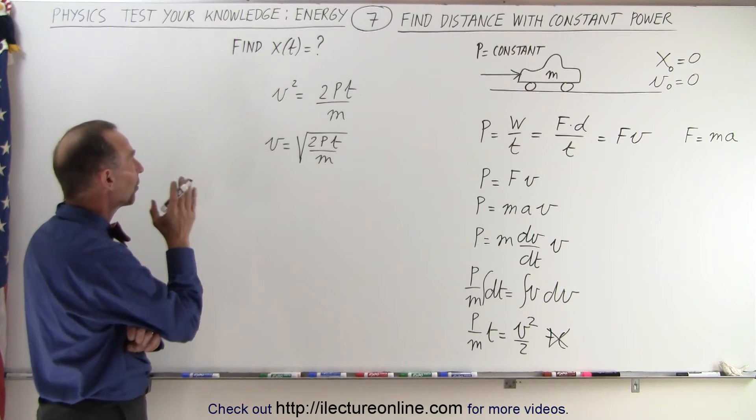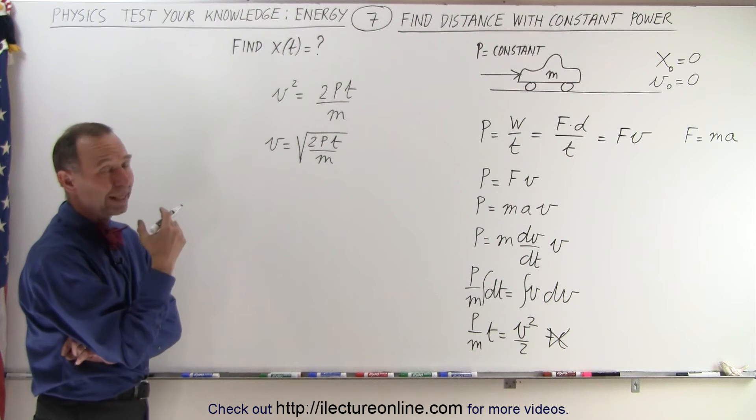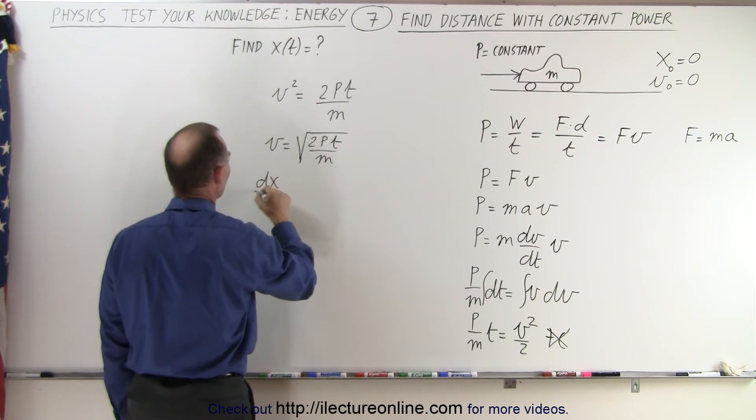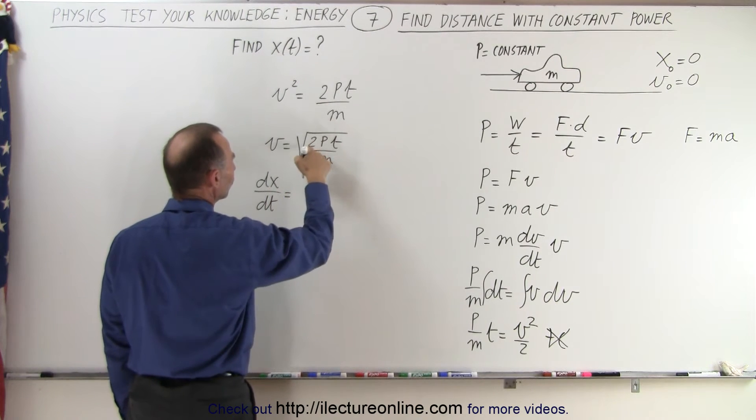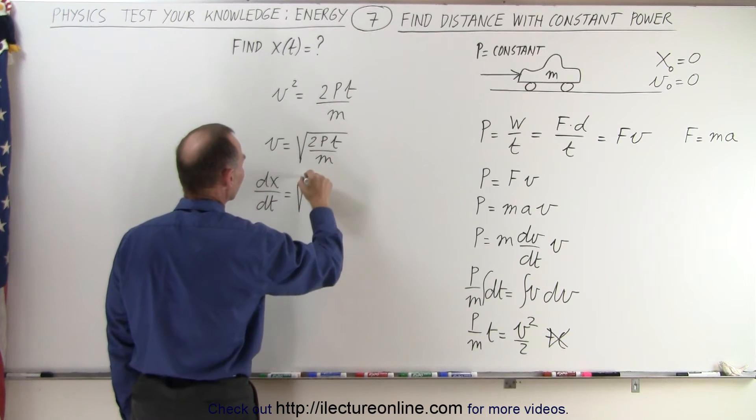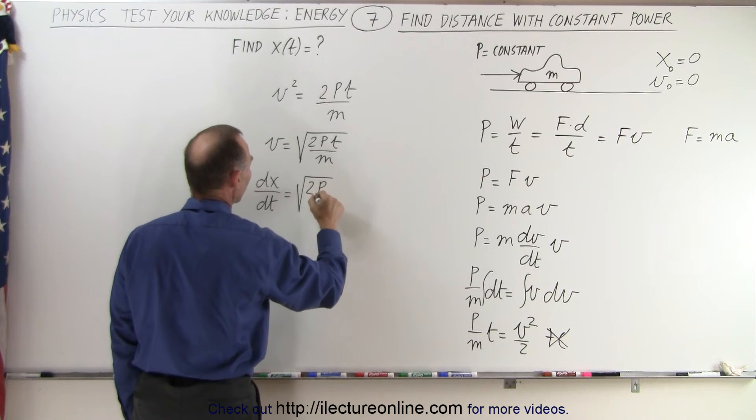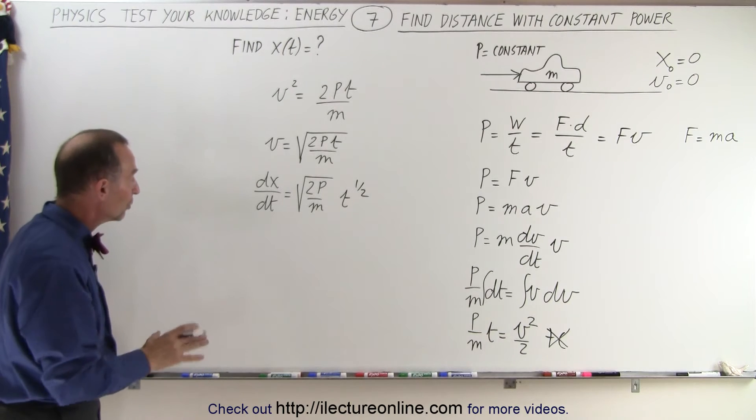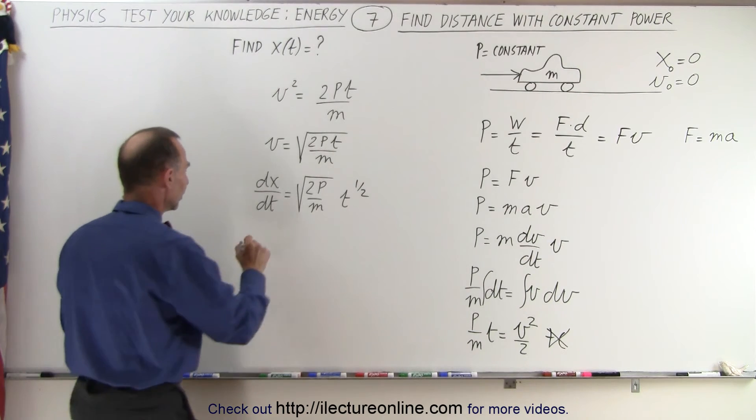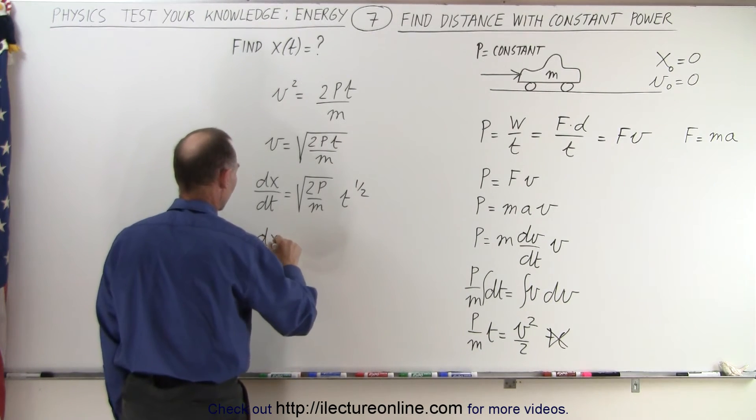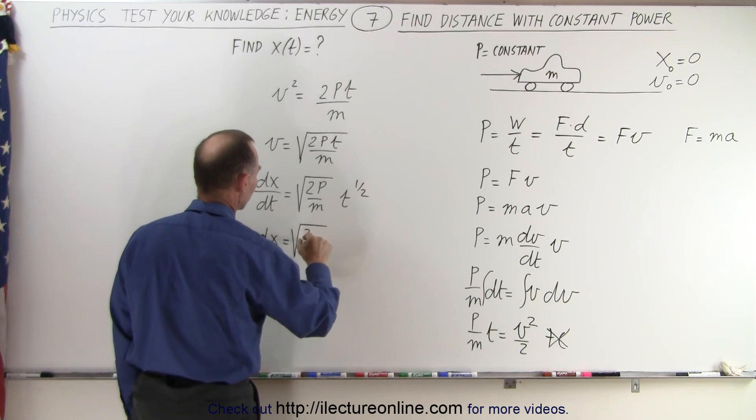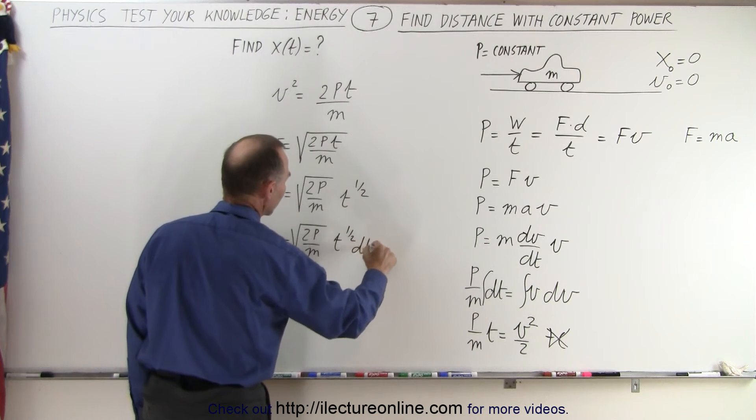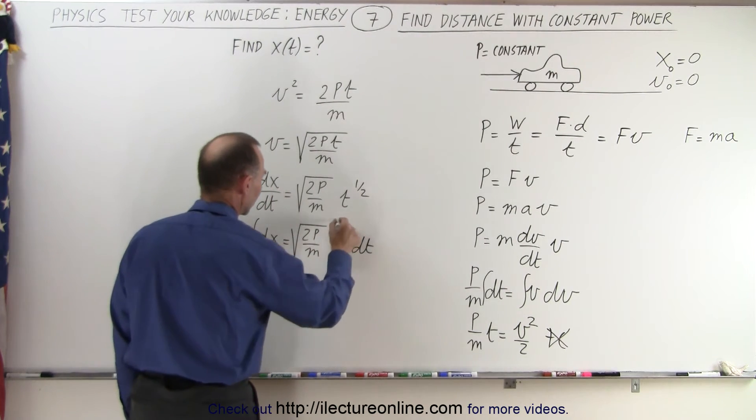We don't want velocity, we want position, which means if we write v as dx/dt, and on the right side, since 2P and m are all constants, we can write this as the square root of 2P/m times t to the one-half power. And notice what we can do now. We can separate the variables again. So on the left side, we have dx. On the right side, we have the square root of 2P/m times t to the one-half power times dt. And now again, we can integrate both sides.